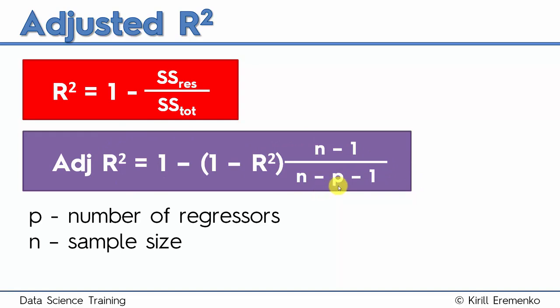And in that sense, it's a fair battle here. If your variable is not good, it's not helping the model, then adjusted R squared, this will be an insignificant increase. And this penalization factor will actually drive adjusted R squared down. If, on the other hand, your new variable that you added is helping the model a lot, then the increase in R squared will be substantial and it will overwhelm this penalization factor.